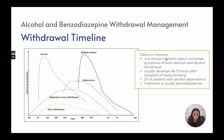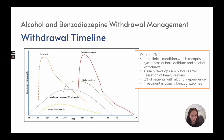Delirium tremens is a clinical condition comprising symptoms of both delirium and alcohol withdrawal, usually developing 48 to 72 hours after cessation of heavy drinking. About 2% of patients with alcohol dependence will develop DTs. Treatment is usually benzodiazepines, titrated accordingly.